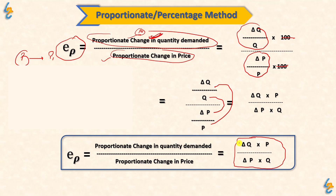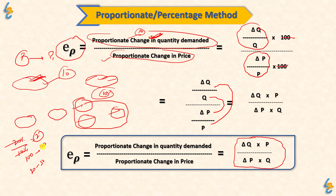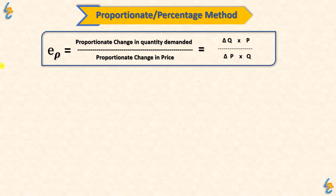If we are given directly that price changed by 10% and quantity changed by 20%, we can find the elasticity. Or if we are given actual values — say price was 100 and changed to 20, or the price was 30 and quantity was 120 — we can put it into the formula. We can use either the percentage information or the direct price and quantity information.